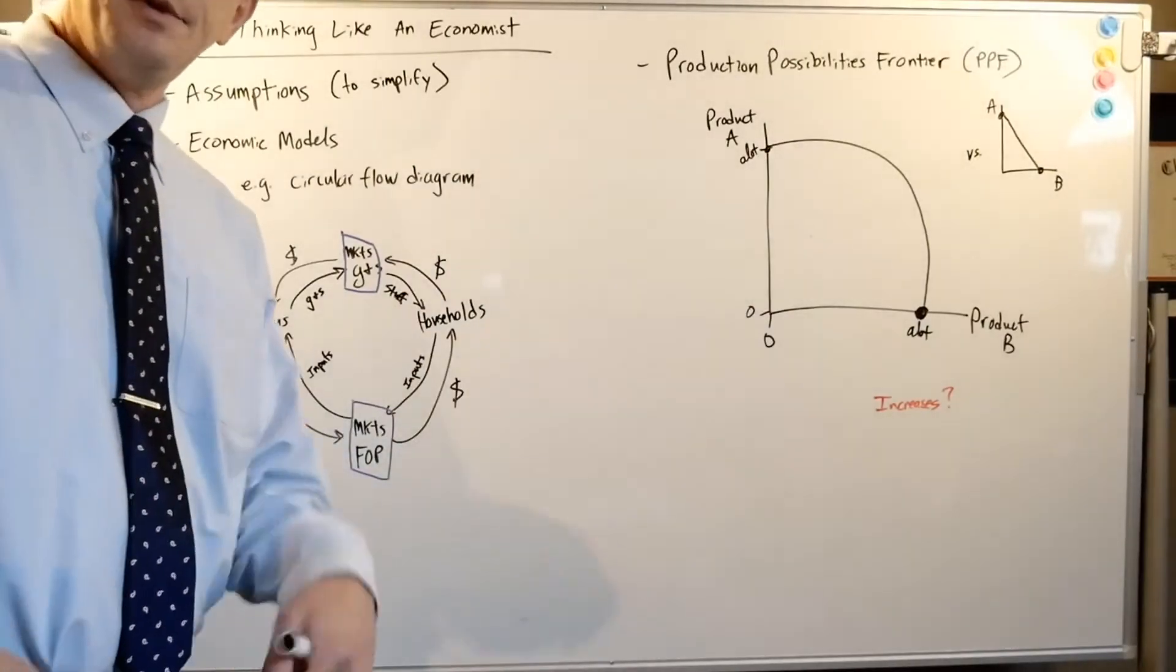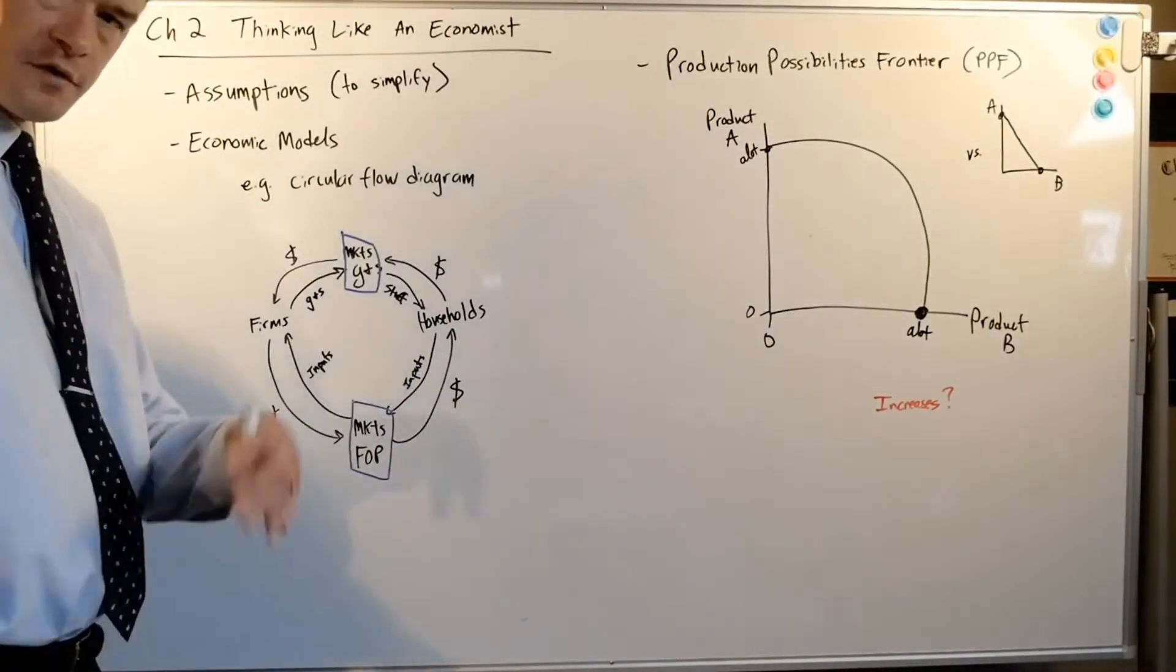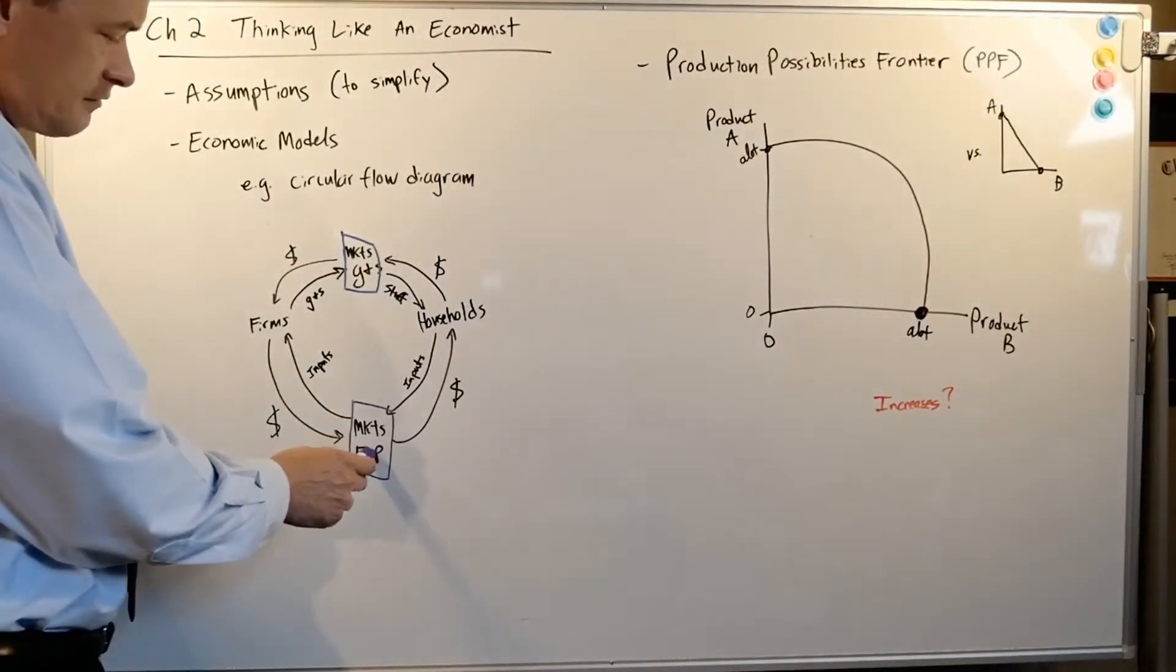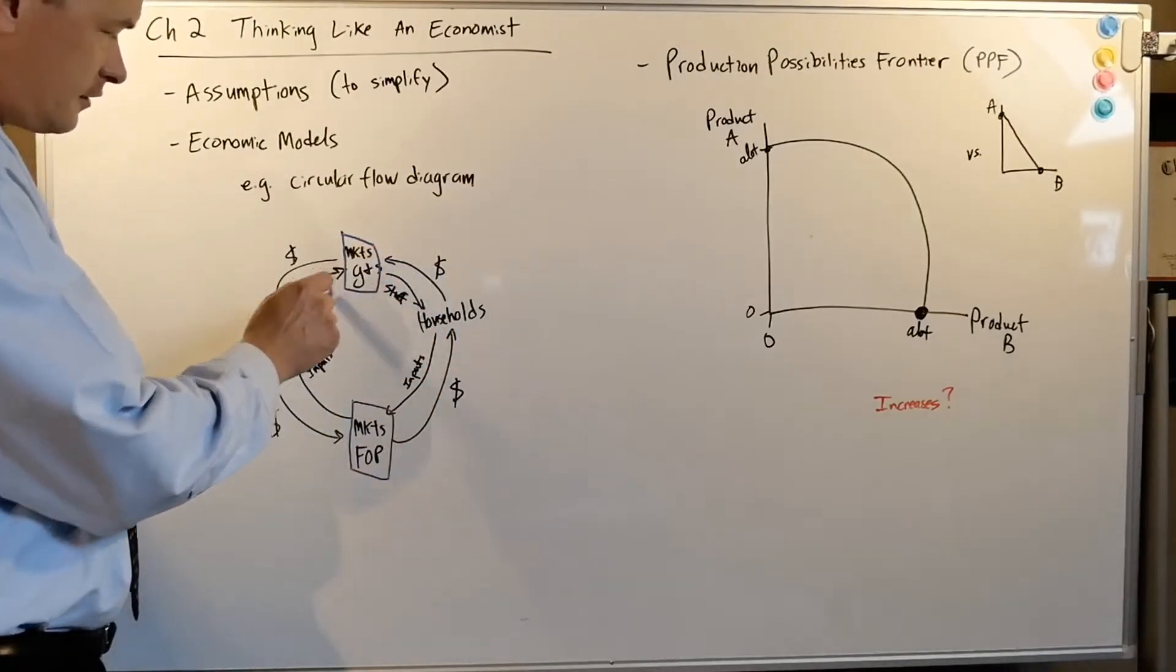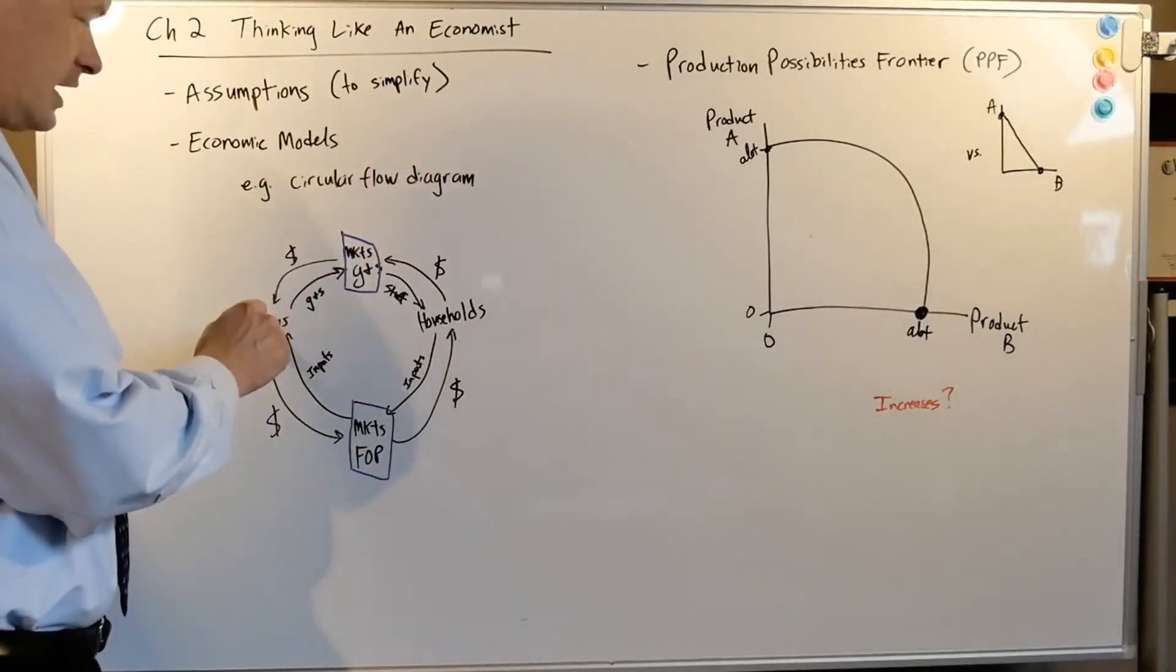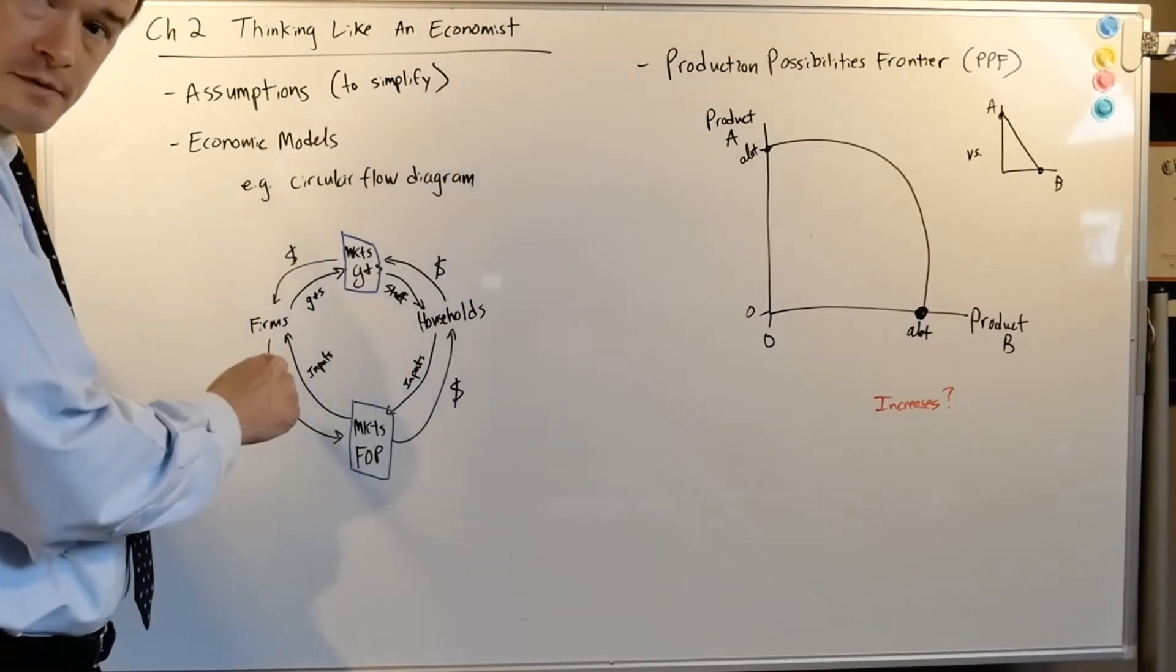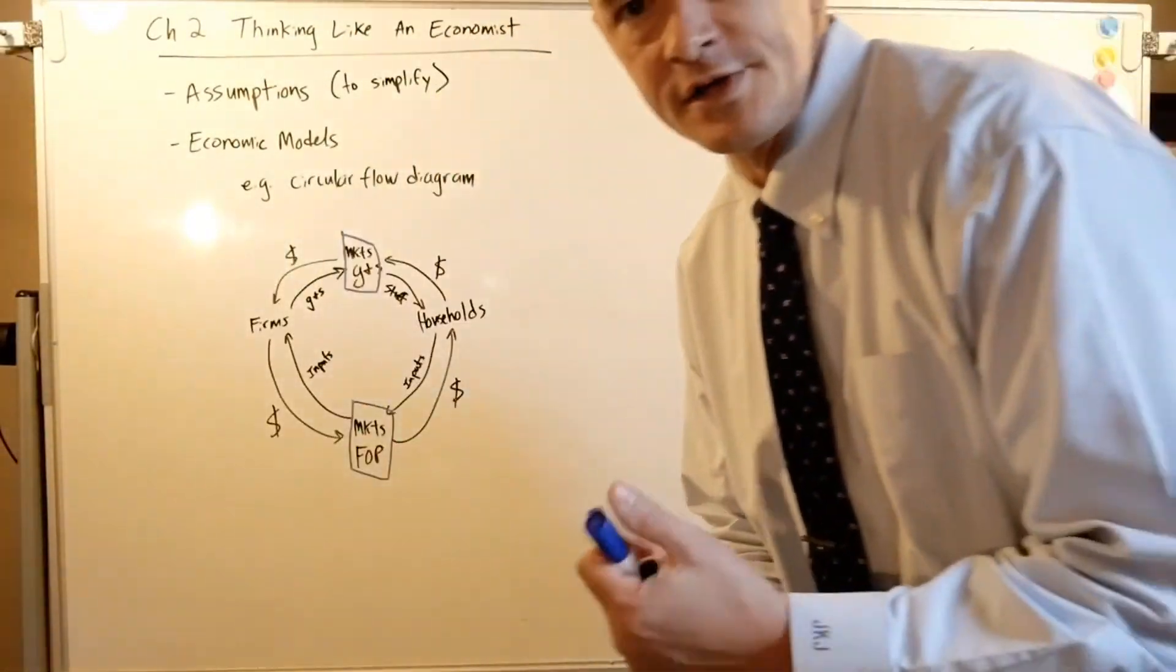And in return they get paid for that, or they sell them the land for BMW to build a new plant there. They give them inputs. This is an oversimplification of a very dynamic situation again. So you've got money from the markets and the factors of production going to households. They spend that money in markets. Firms get that money in return for sending goods and services and they buy more inputs. All right, it's a continuous cycle. Again, an oversimplification of a very complicated relationship.